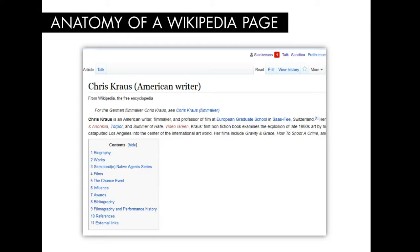Let's get started by orienting ourselves on a Wikipedia page. While most of you have probably seen a Wikipedia page before, let's take a closer look. At the top of the screen, you'll see three tabs you can select: Read, Edit, and View History. We're open to the Read page right now, which is how most of you have probably accessed Wikipedia articles in the past. At the top left, you'll notice two tabs: Article and Talk.